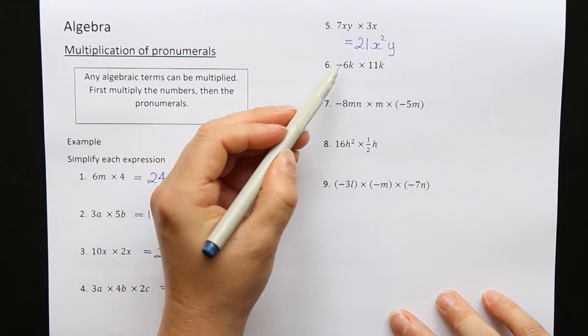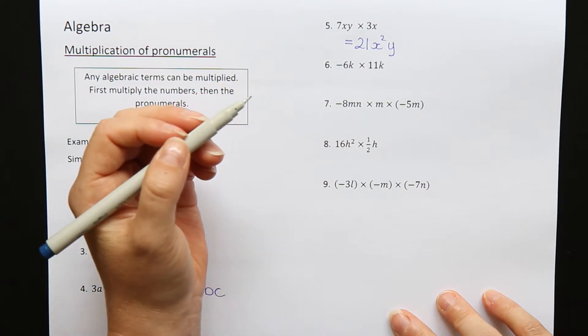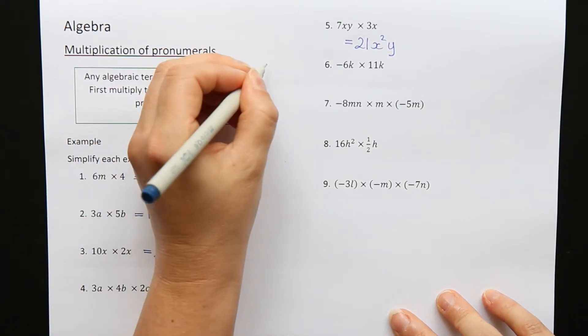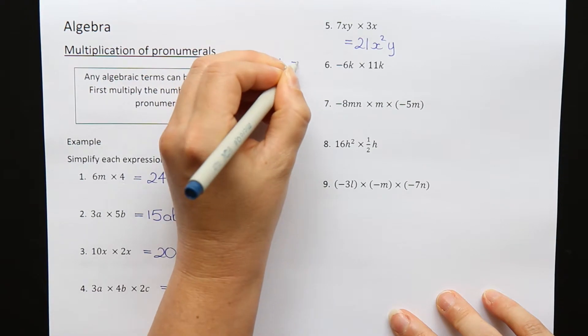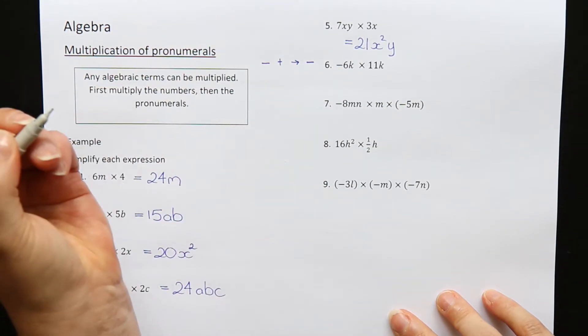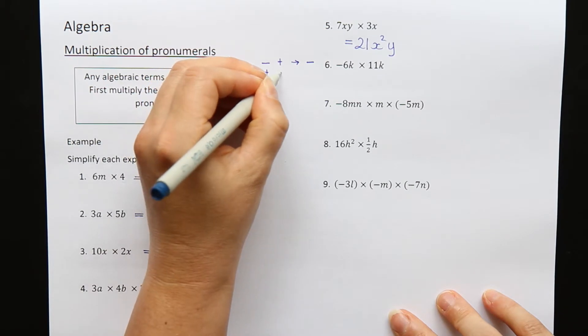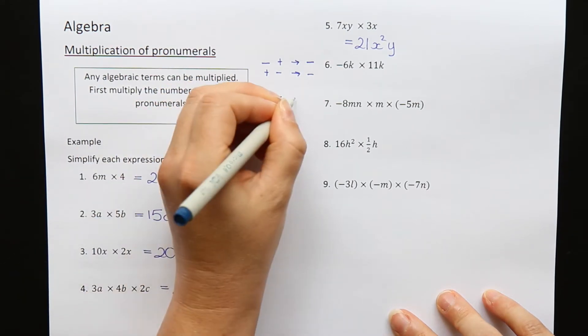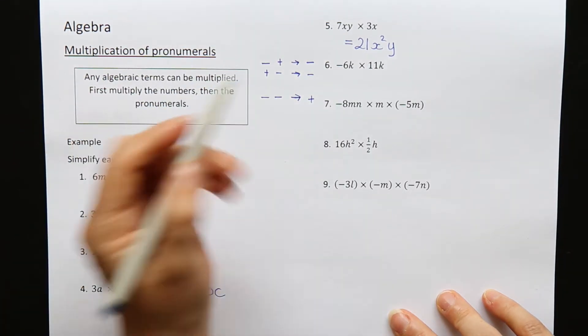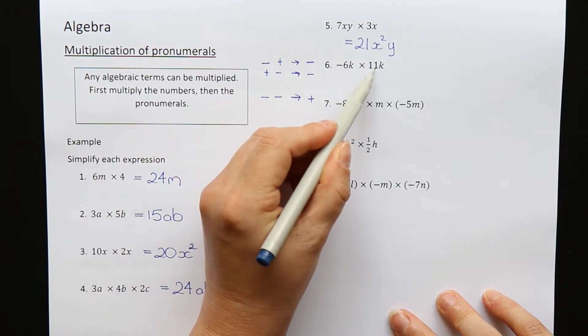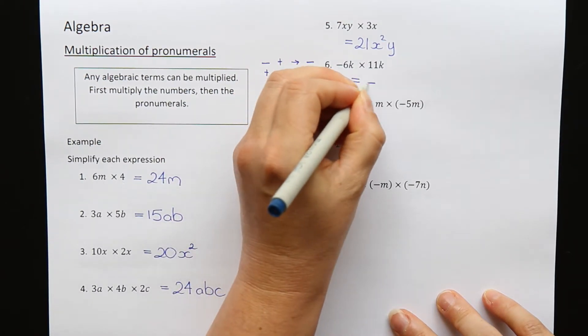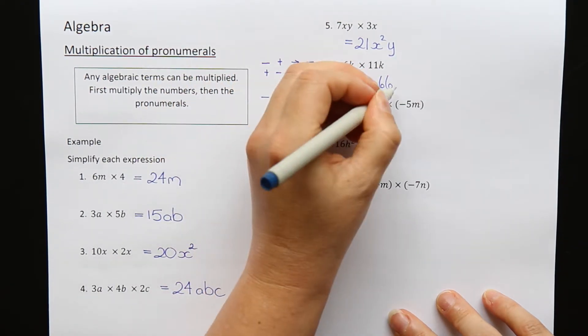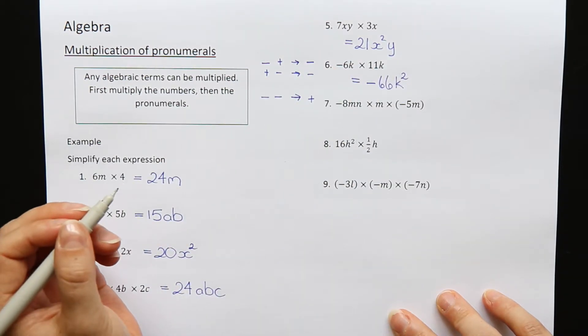Question 6: minus 6k times 11k. We can multiply negative numbers. Remember, if you're multiplying a negative number and a positive number, you'll get a negative answer. If you're multiplying two negative numbers, you will get a positive answer. Here I have a negative times a positive 11, so I'm going to get a negative. 6 times 11 is 66, and k times k is k squared.